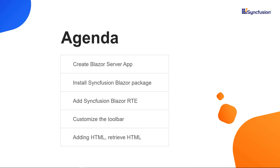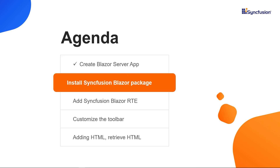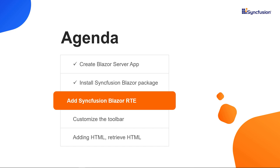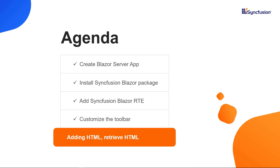In this video, I'll explain how to create a Blazor Server application and add the Syncfusion Blazor package. Then, I will show you how to add the Syncfusion Rich Text Editor component with default HTML content to the Blazor Server application. After creating the Rich Text Editor, I will demonstrate prominent features like customizing the toolbar and adding HTML elements. Finally, I will show you how to retrieve the formatted HTML content from the Rich Text Editor.